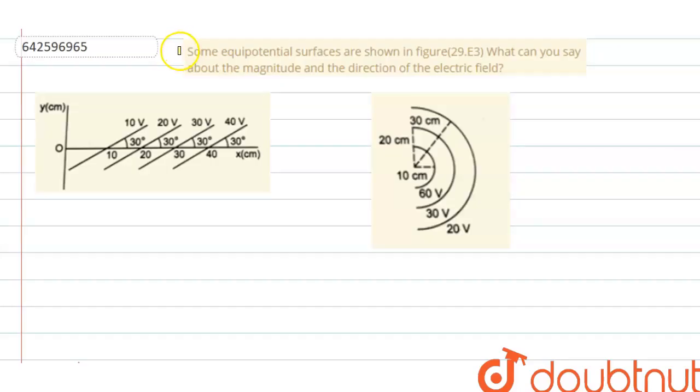Hello everyone, let us start with the question. The question says that some equipotential surfaces are shown in the figure. What can you say about the magnitude and the direction of the electric field? So we all know that the electric field is always perpendicular to the equipotential surface. So here this is the equipotential surface, therefore the electric field will be perpendicular to it.